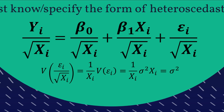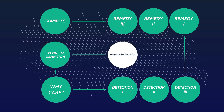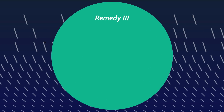Since the variance of the original error term was sigma-squared times X, the X terms cancel out and you're left with a constant variance — sigma-squared. So all you need to do is run a regression using those two new weighted variables. Interpreting the output will be a little more difficult, but for the purposes of creating a heteroscedasticity-free regression, this approach works well.